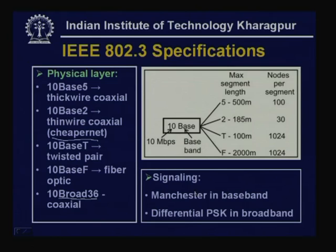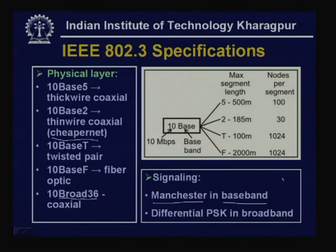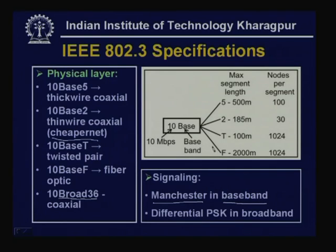For baseband signaling, Manchester encoding is used. Manchester encoding helps synchronize the clock at the receiving end, which is why it is used in IEEE 802.3 or Ethernet. Whenever broadband signaling is used, differential phase shift keying is used, but broadband is not very popular — baseband signaling is the most popular, so we mainly focus on networks based on baseband signaling.